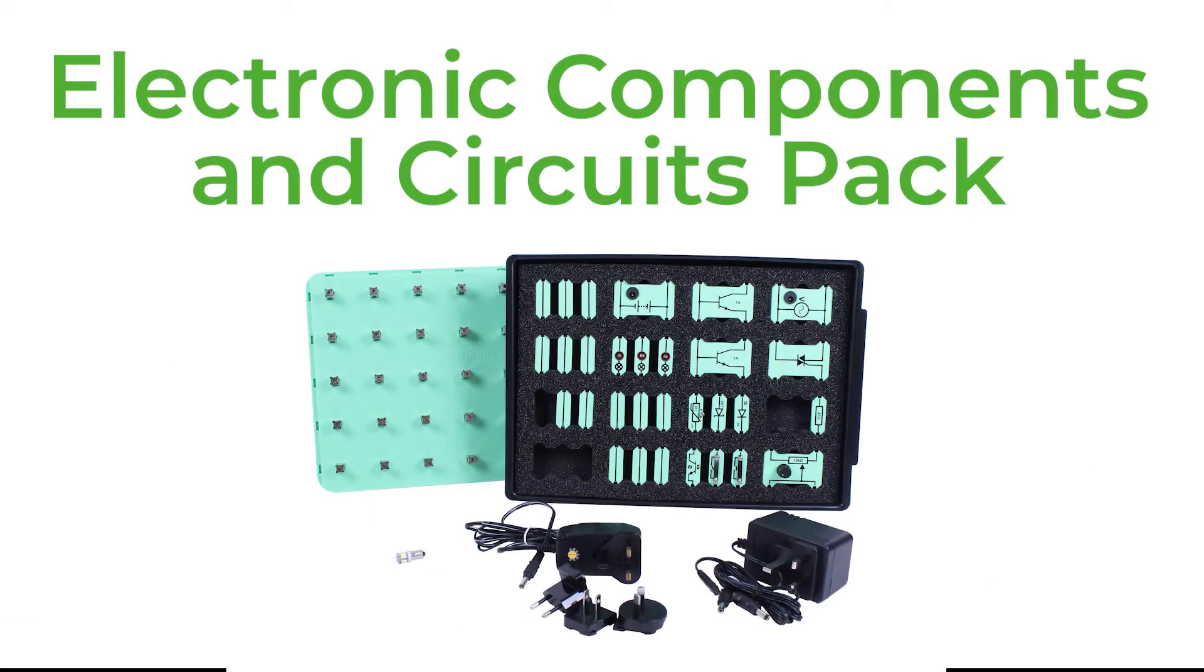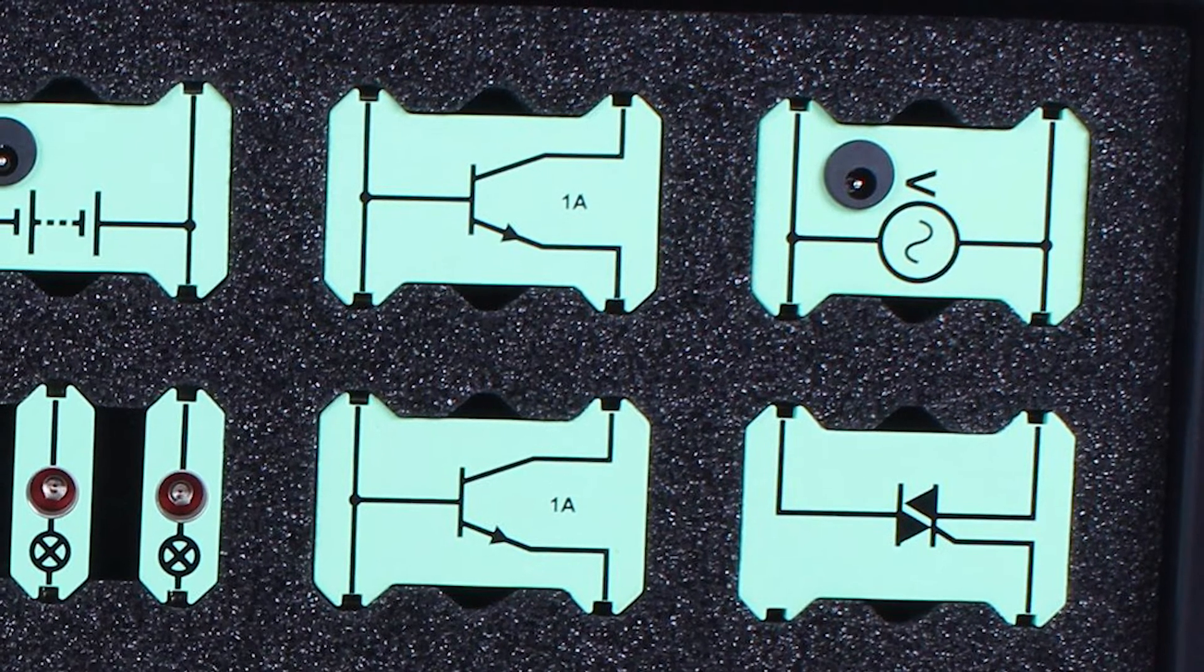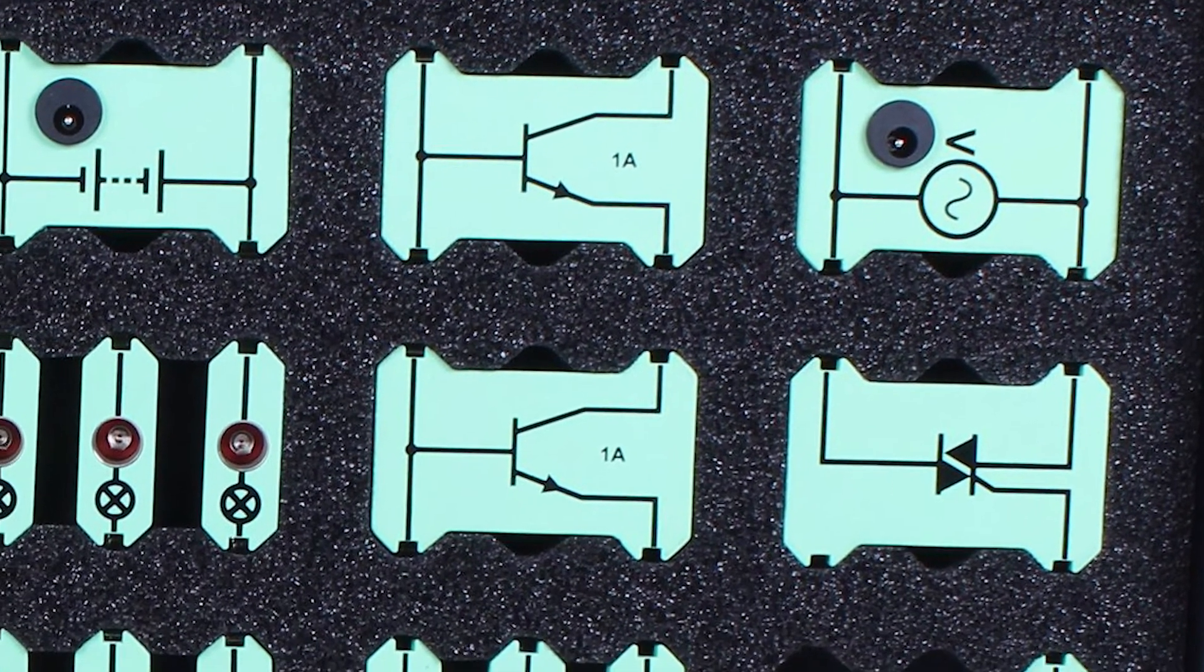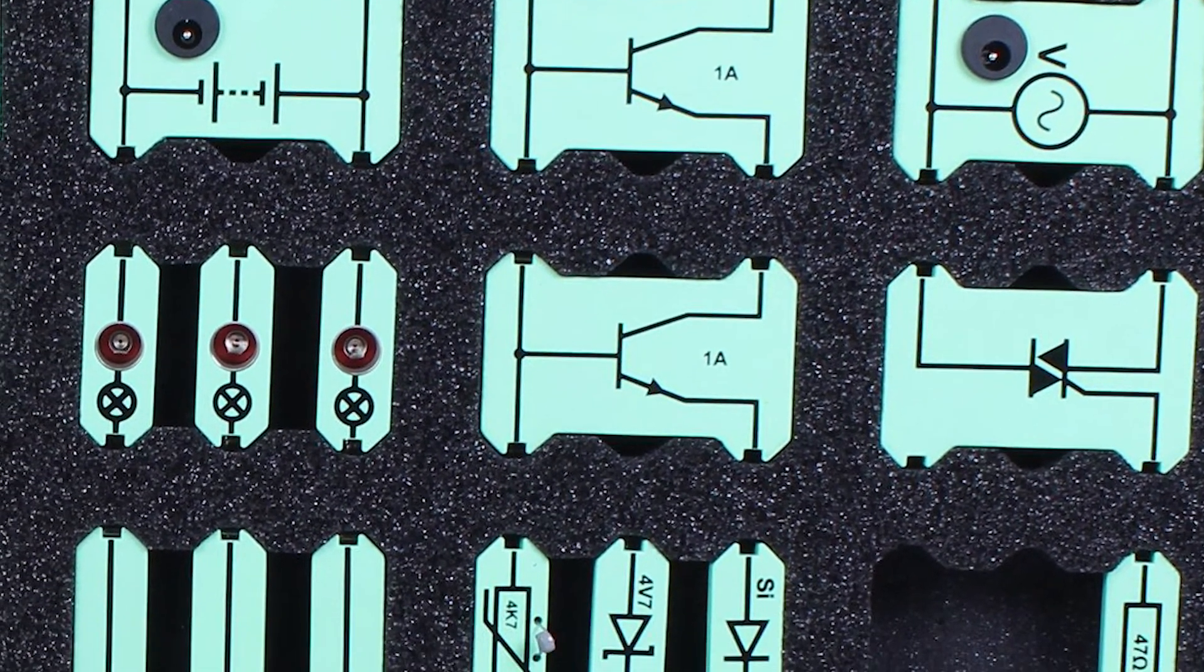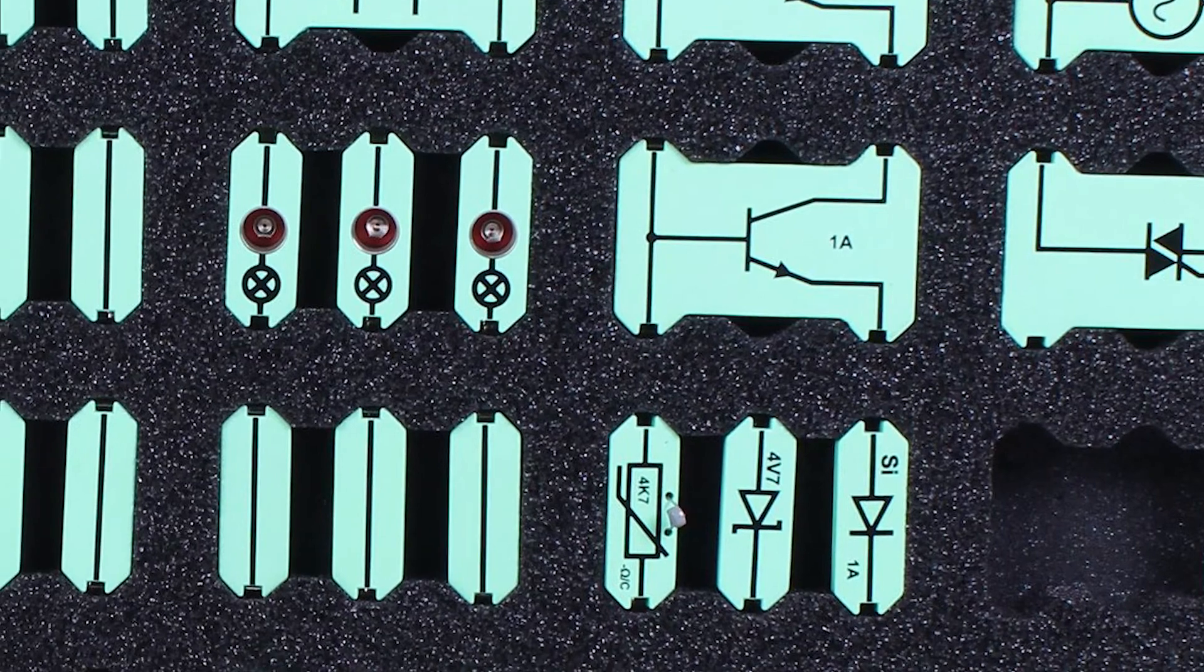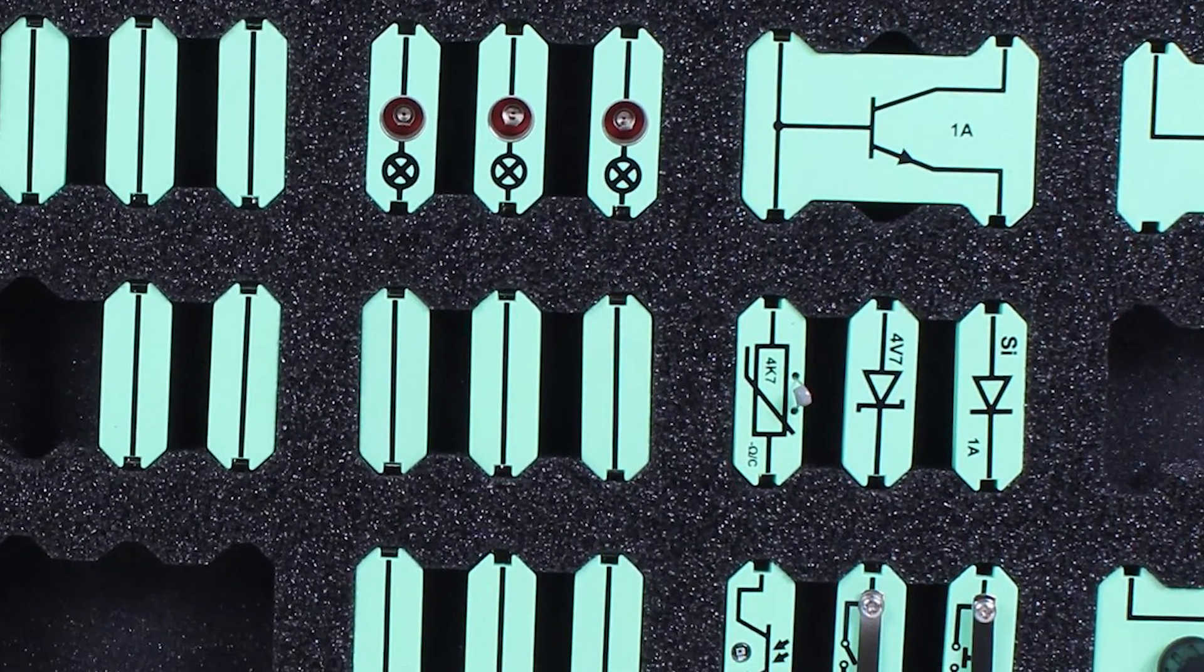Also at level two, we have another kit which is applicable. This kit is the electronic components and circuits pack. This kit includes a range of practical assignments which allows students to understand the operation of a range of commonly used components in both AC and DC circuits.